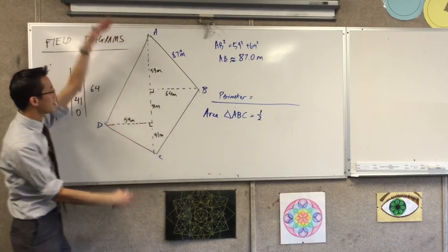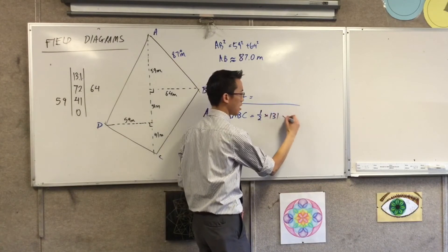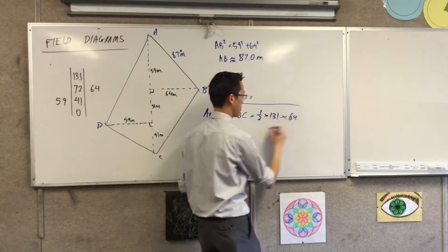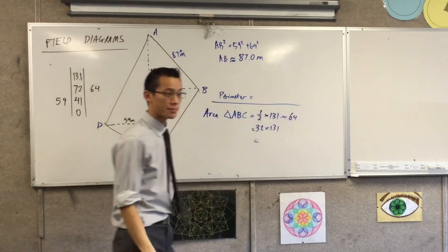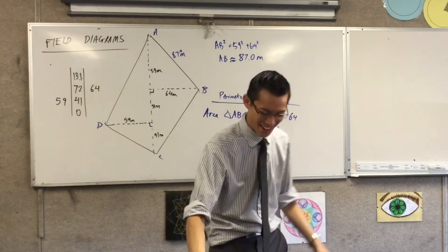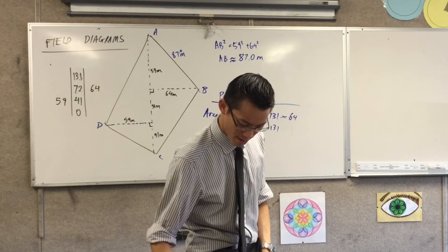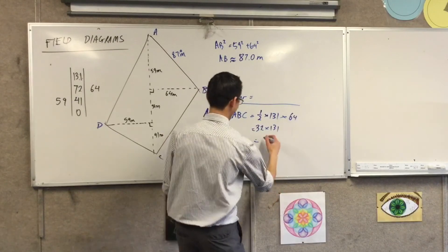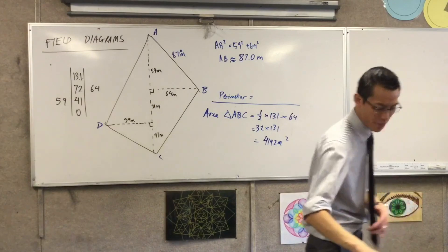So I'm going to go to this base, which the field diagram tells me, sorry, the measurements tell me, is 131. And then I'm going to go with the perpendicular height, which is 64. So I don't know what 32 times 131 is. Can someone tell me? 5,000. 5. I'm going to beat someone to this one. And then you can add it all up. That's just half, yeah?